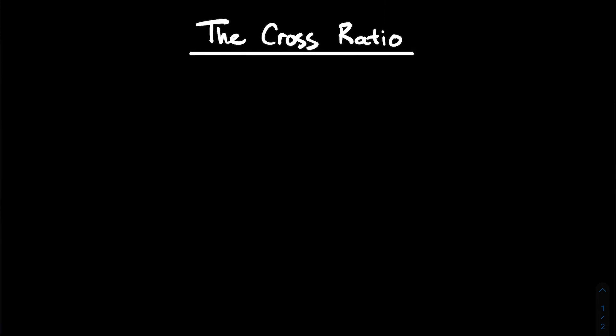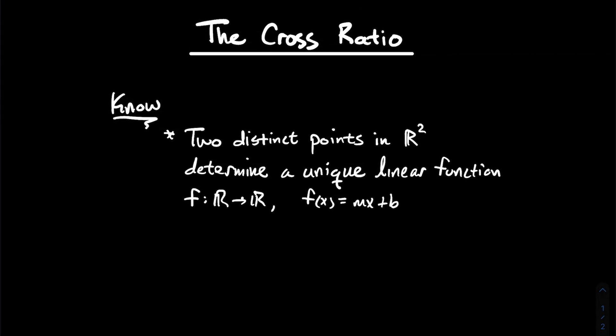In this video we're going to talk about the cross ratio for the extended complex numbers. We're going to start off with something that we know from college algebra and some calculus classes. The first thing: two distinct points in R2 determine a unique linear function, where this function is viewed as having only one real input.